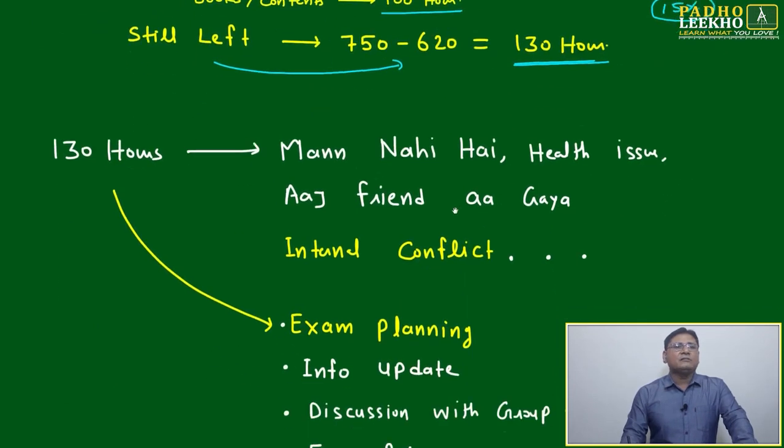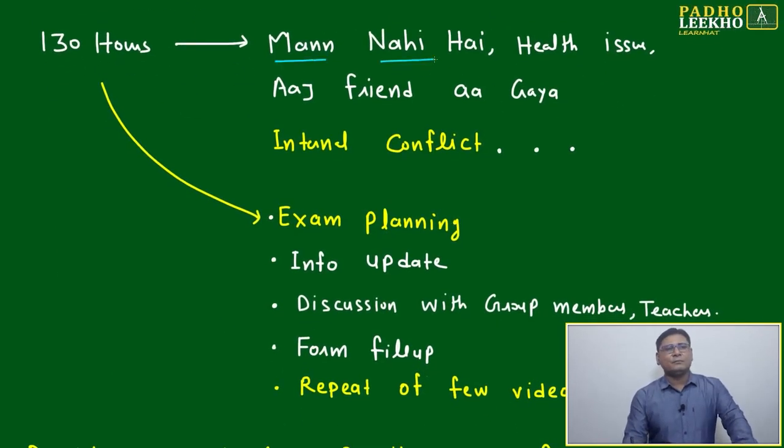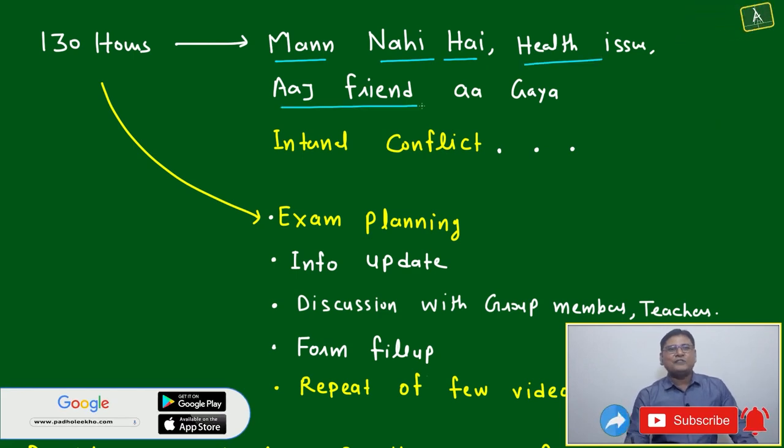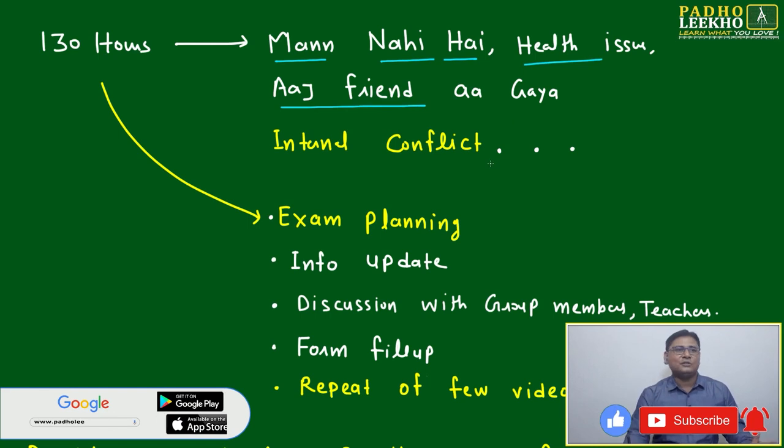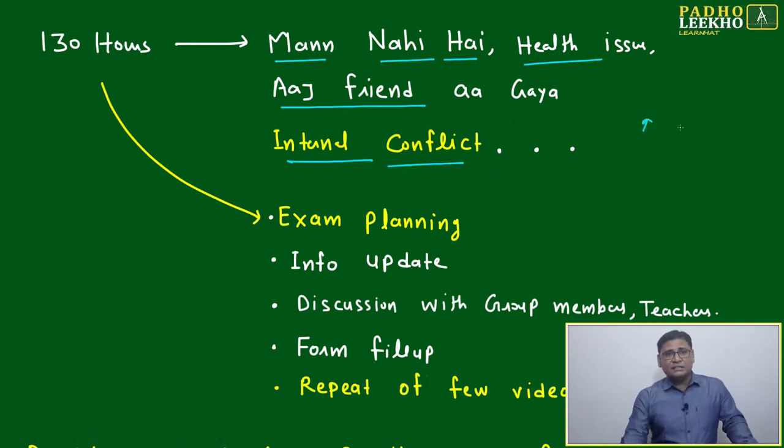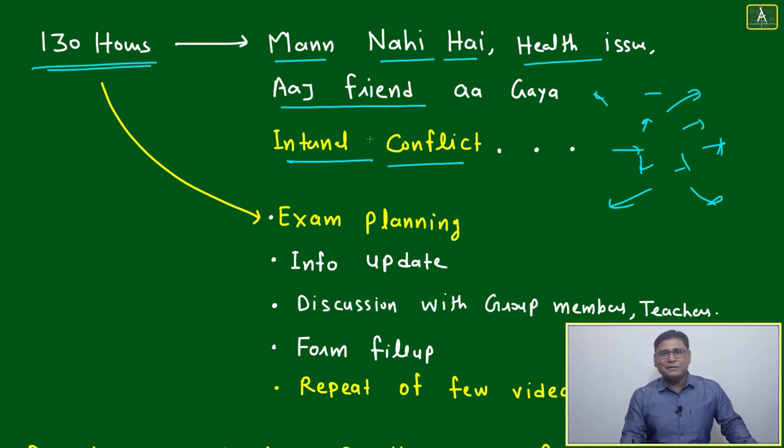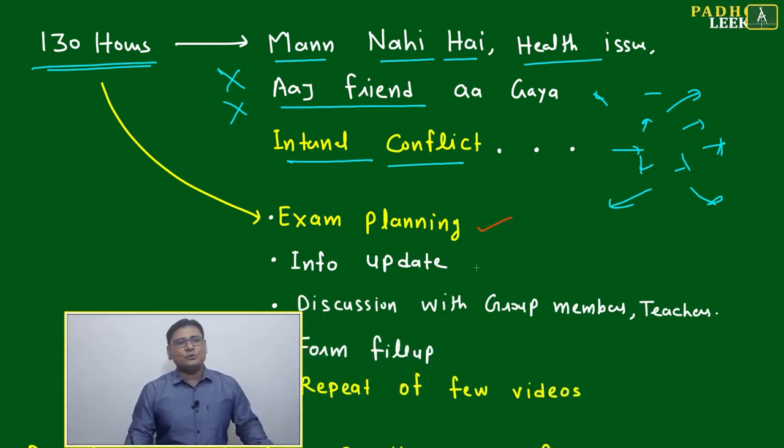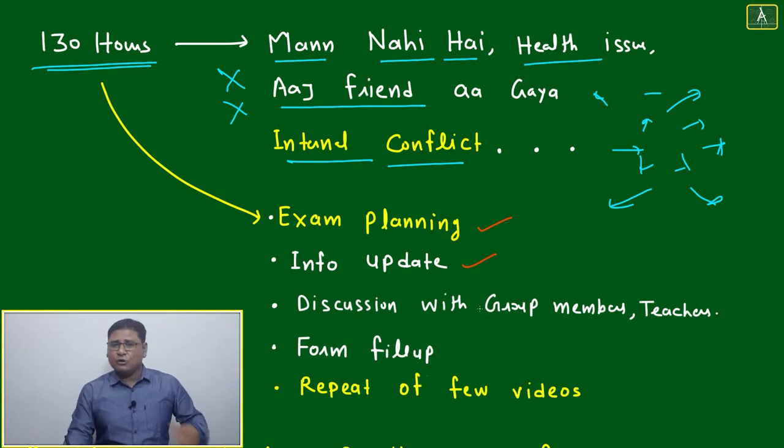Now this 130 hours left - what can you do? Many things that we generally do. You still have scope. Today it's not good, it's a health issue, today a friend - I'm just cutting hours from your preparation. If you're not doing all these things, you have better scope. You can do all these things. 130 hours you can use for exam planning, information updates from different sources, or you can directly contact me - you can call and WhatsApp.